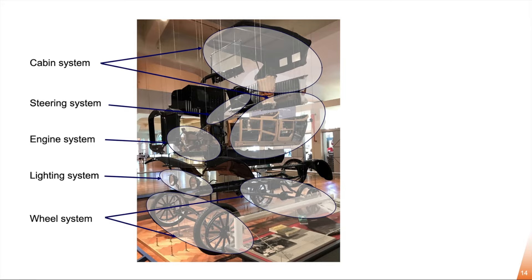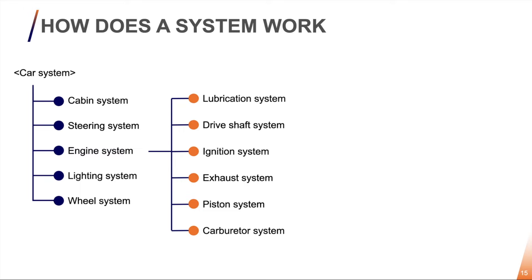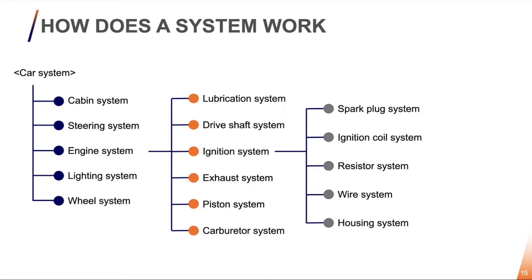We can try to break that down even further. Let's start with the engine system. The engine system can be broken down into its system elements: a lubrication system, drive shaft system, ignition system and so on. We can also break that down further — the ignition system consists of a spark plug system, ignition coil system, wire system and so on.